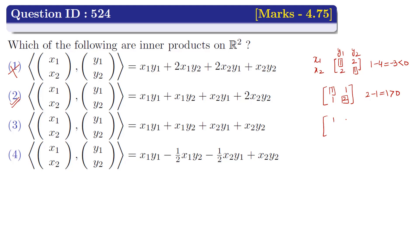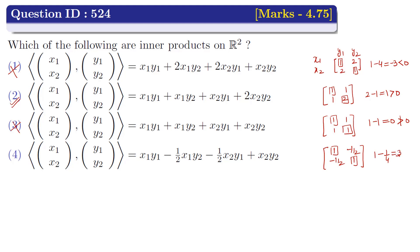The matrix representation of Option 3 is [[1, 1], [1, 1]]. Since the diagonal elements are positive but the determinant is 1 − 1 = 0, which is not greater than 0, Option 3 cannot be an inner product. The matrix representation of Option 4 is [[1, −1/2], [−1/2, 1]]. Since the diagonal elements are positive and the determinant is 1 − 1/4 = 3/4, which is greater than 0, Option 4 is an inner product.